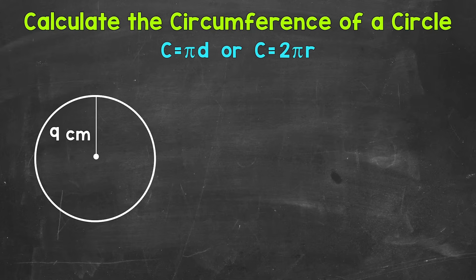The circumference is the distance around a circle — so the perimeter of a circle. We can either use the formula circumference equals pi d, so pi times diameter, or circumference equals 2 pi r, so 2 times pi times the radius. Depending on if you're using the diameter or radius, you can use either formula. You'll get the same result either way.